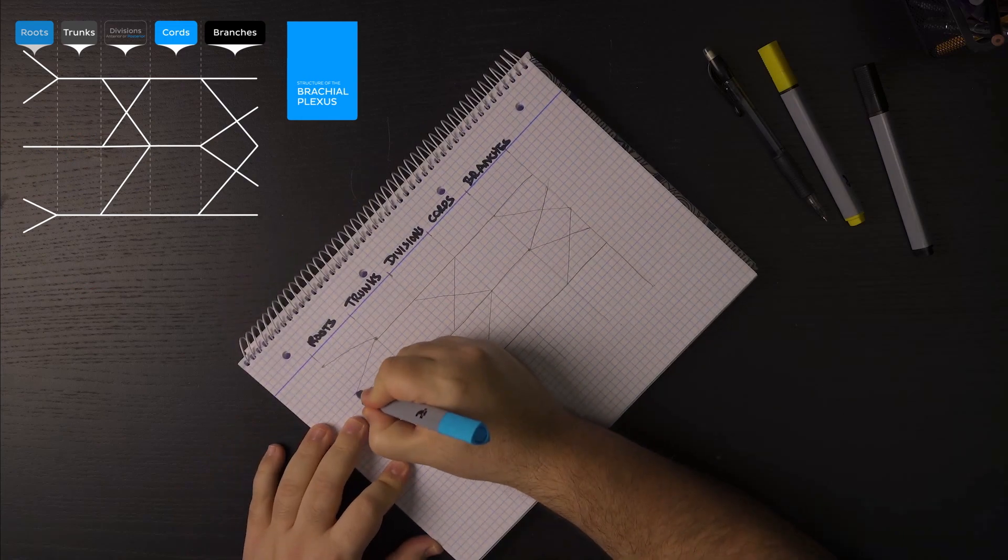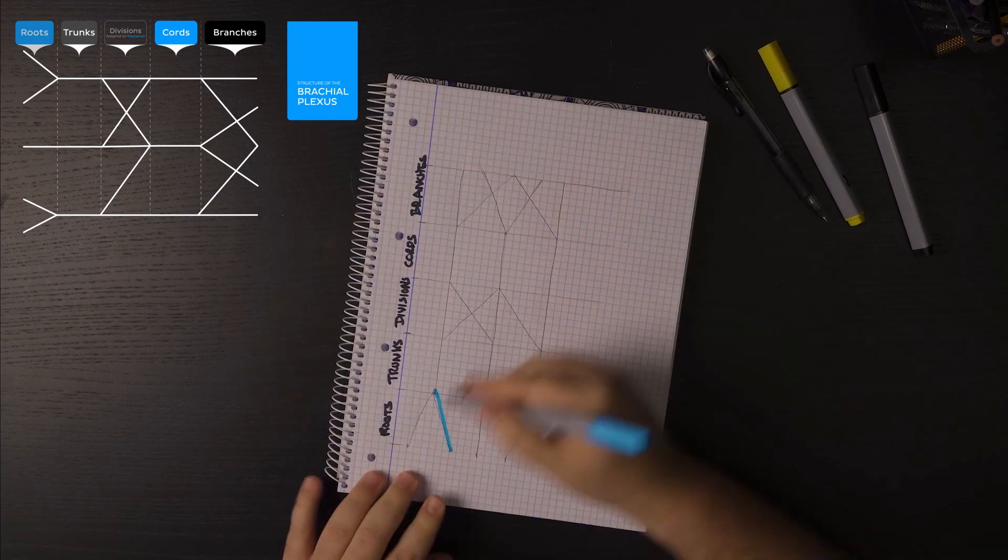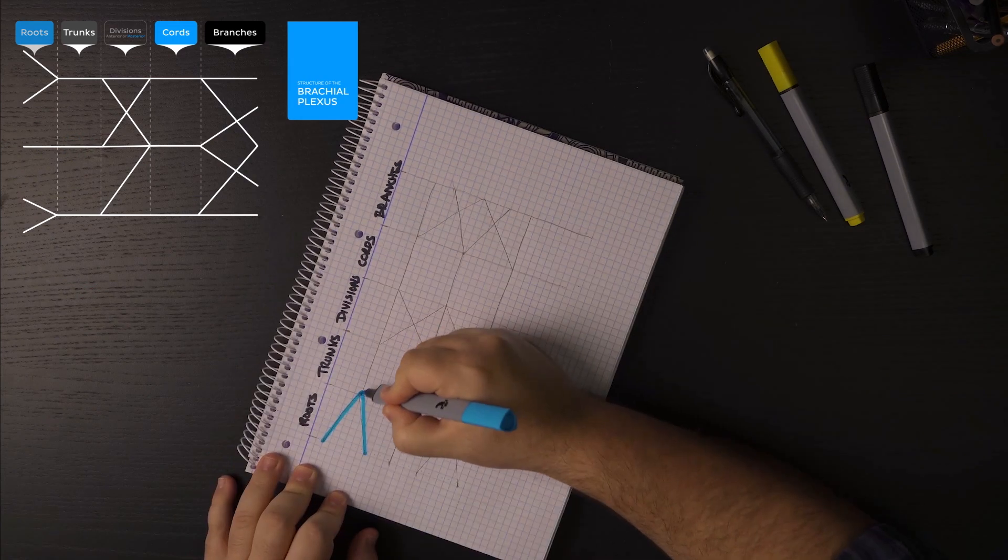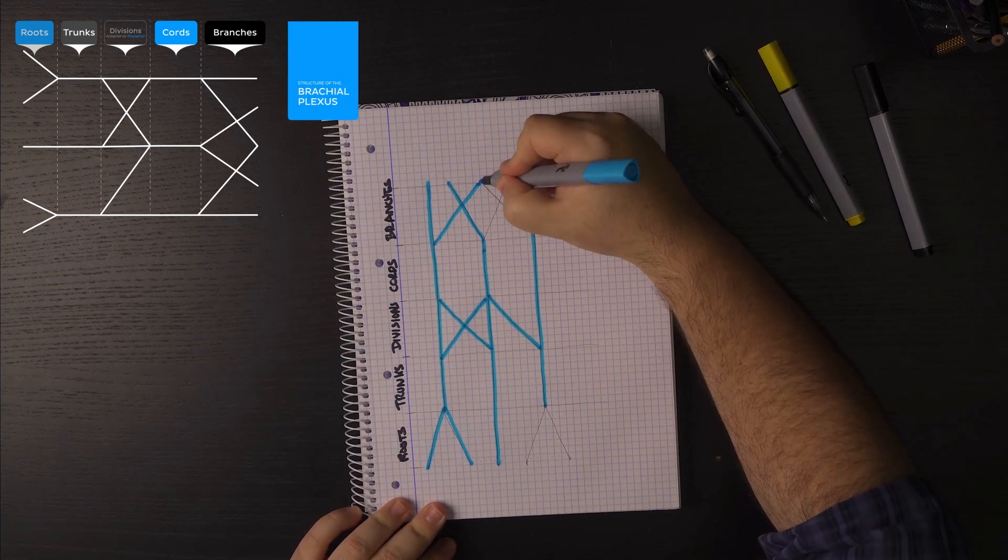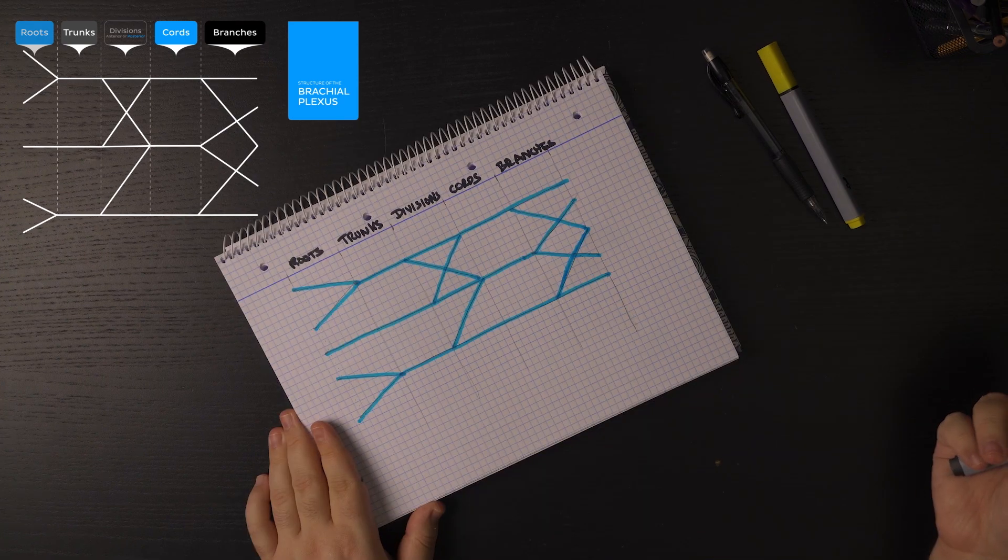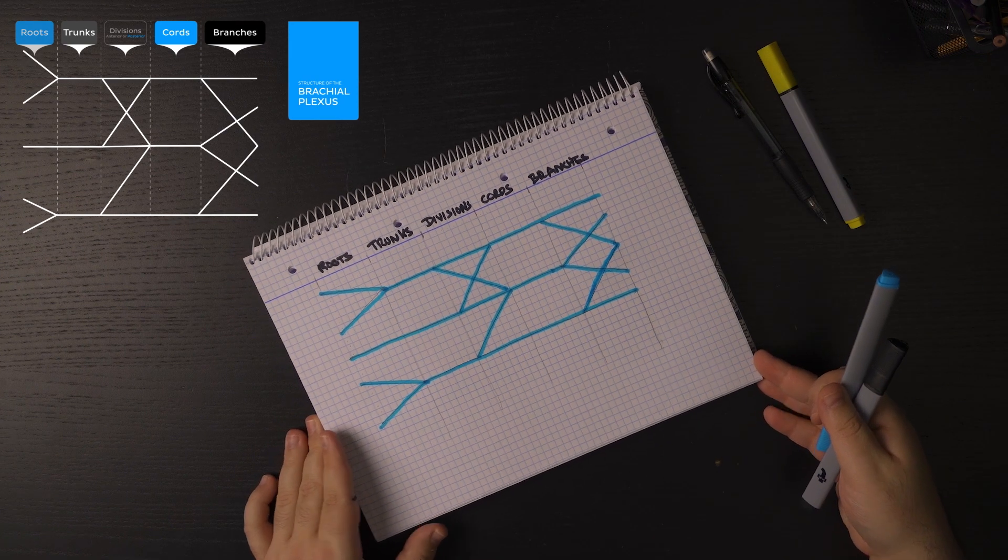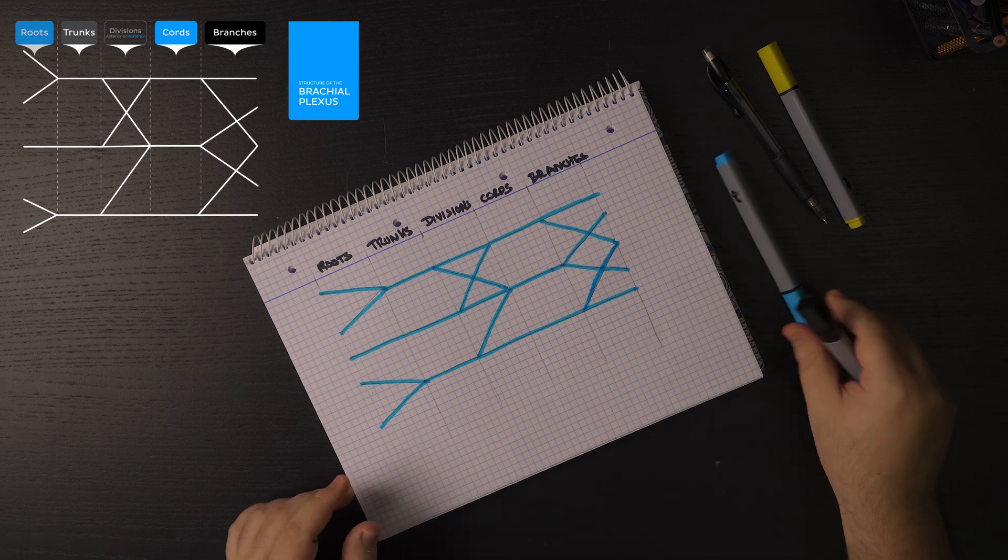Now that we have the shape in pencil, I think it's safe to say that we can go in and just add here some color. I'm going to be adding the marker. So as you can see, we have our beautiful brachial plexus and now in blue marker.